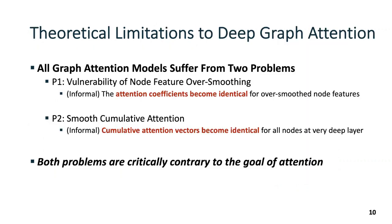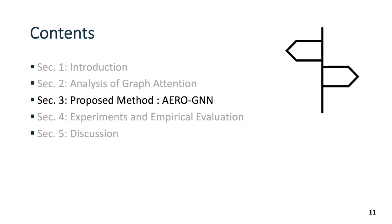In our theoretical analysis, we find that all the discussed graph attention models, including GAT, FAGCN, GPRGNN, DAGNN, suffer from two problems. The first is vulnerability of node feature over-smoothing. Informally, it means that the attention coefficients become identical for over-smooth node features. The second problem is smooth cumulative attention, meaning that cumulative attention vectors become identical for all nodes at very deep layers. We refer their details to our original research paper. However, note that both problems are critically contrary to the goal of attention.